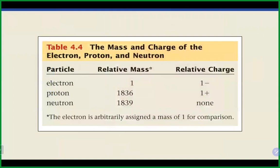To summarize: electrons are negatively charged and travel in the empty space; protons are positively charged; neutrons have no charge. In terms of mass, protons and neutrons are much heavier than the electron. The neutron just barely edges out the proton as the heaviest of the three subatomic particles.